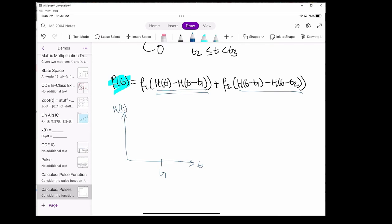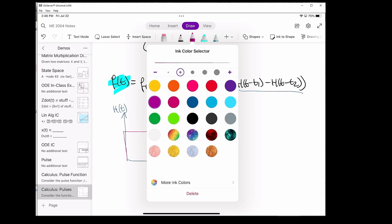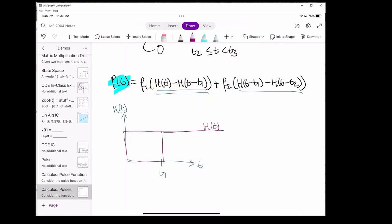I'm going to plot both of these functions individually. Let's start with a regular unit step function h of t. And now let's plot h of t minus t1. When we subtract these two functions, we're left with just this area right here.